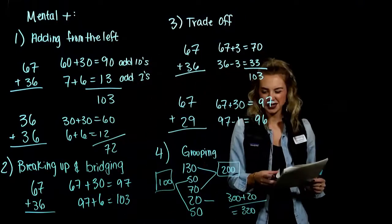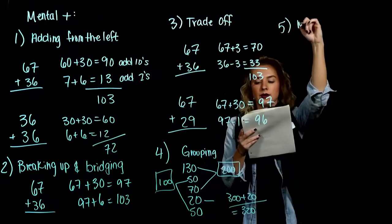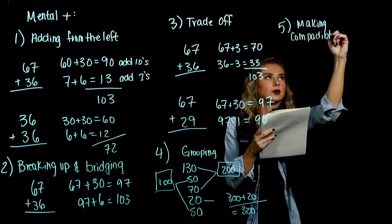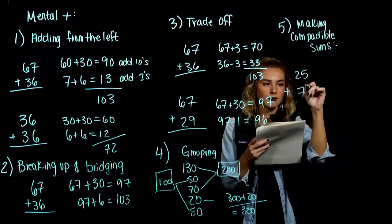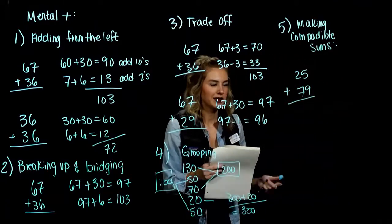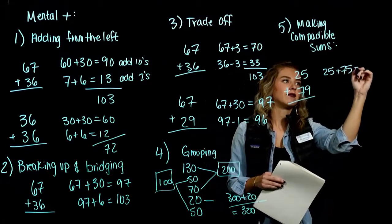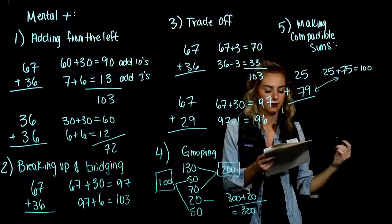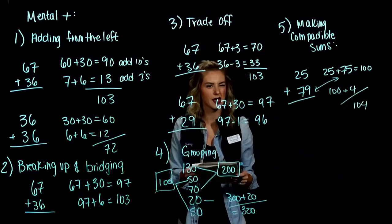We can mentally compute quicker by grouping. Fifth method: making compatible sums. For 25 plus 79: 25 and 75 give a nice 100, and the remaining 4 from 79 gives us 104. All these mental strategies get the same idea across in different ways.